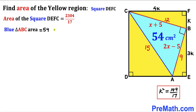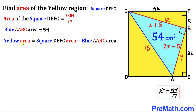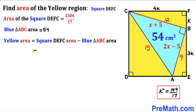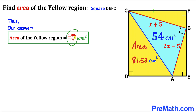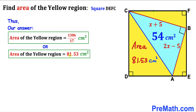We already know the area of blue triangle ABC is 54. So the yellow shaded area = 2304/17 − 54 = 2304/17 − 918/17 = 1386/17 cm², which is approximately 81.53 cm². Thanks for watching and please don't forget to subscribe to my channel for more exciting videos.